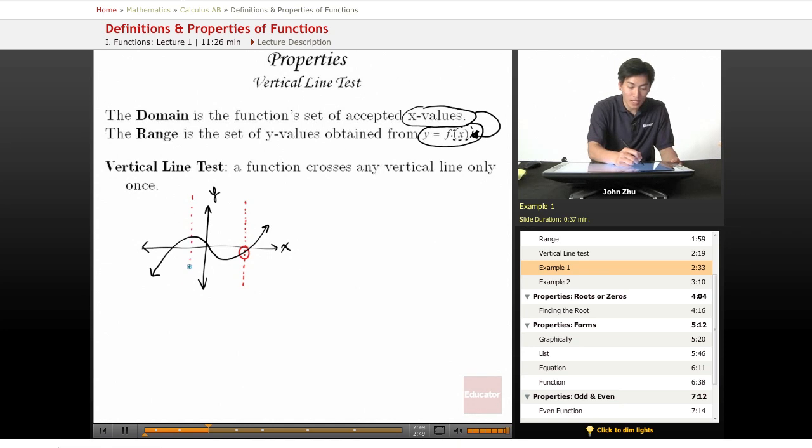If you draw a vertical line here, we also have one crossing point. If we look at anywhere along this line, we're only going to get one crossing point. So, one crossing point means that is a function.